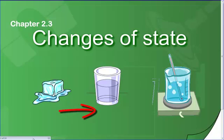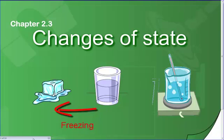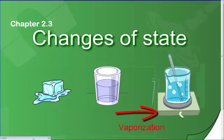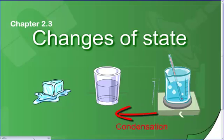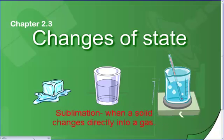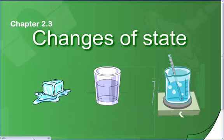Going from solid to liquid, the change of state will be called melting. Going from liquid to solid, the change of state will be called freezing. From liquid to gas, the change of state will be called vaporization. And going from gas to liquid, the change of state is called condensation. You will also learn about a fifth change of state called sublimation, and we're actually going to bring dry ice in to show the properties of sublimation.